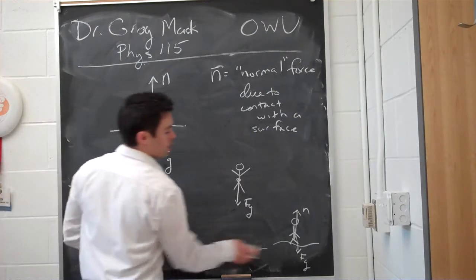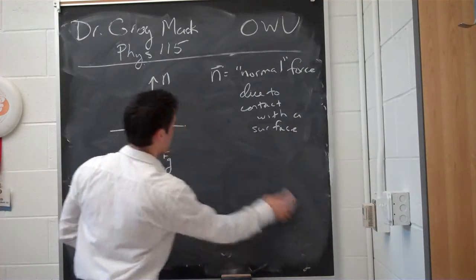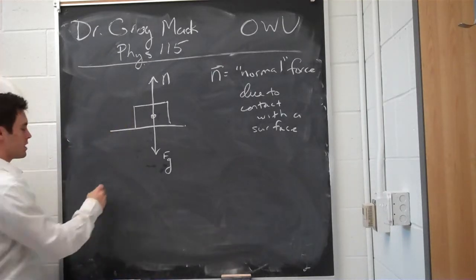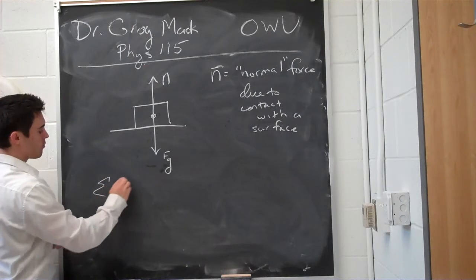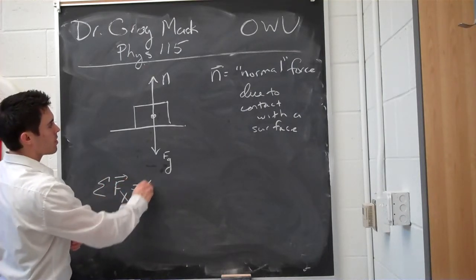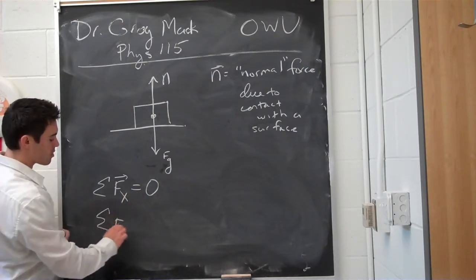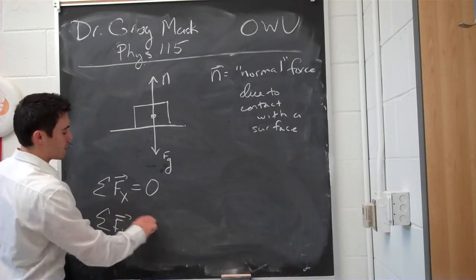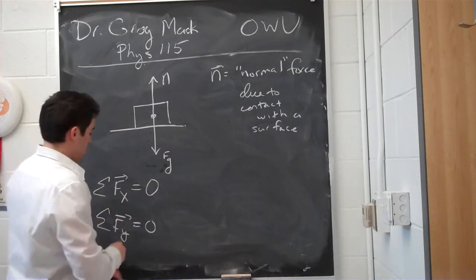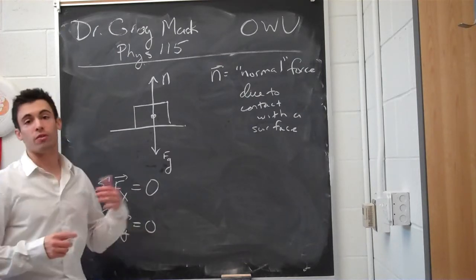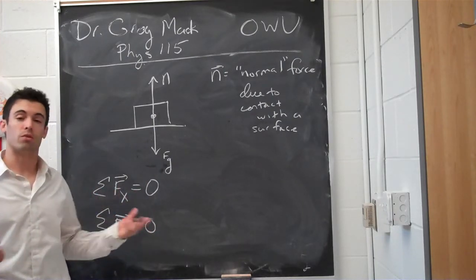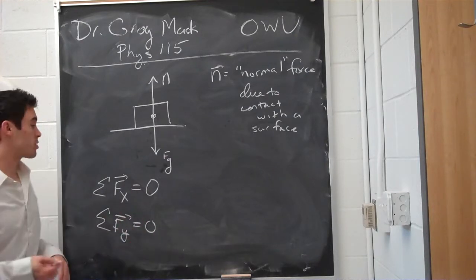If I wanted to write this in correct vector notation for this box, I would say that the sum of the forces in the x direction has to be 0, because it's not moving. The sum of the forces in the y direction has to be 0, because it's not moving. But if the objects were moving, then this would be equal to ma, where a is some unknown acceleration — or depending on the problem, you might know what the acceleration actually is.